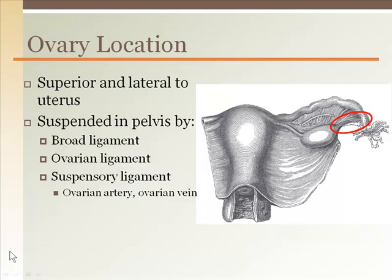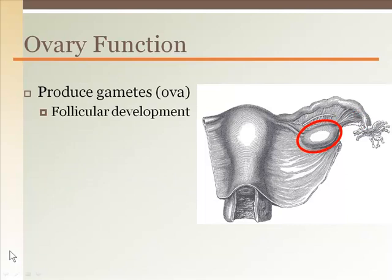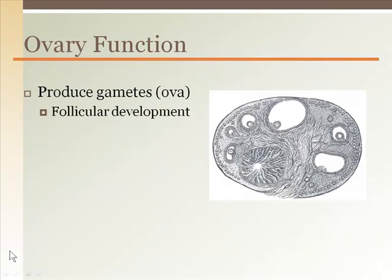The function of the ovary is to mature follicles as the egg or ova develops. All ova or eggs a female will ever have are in her ovaries from the time she was an embryo. The eggs are in a halted state of development until hormonal changes bring them out each month after puberty. Each cycle involves the development of the eggs and surrounding follicles until the follicle enlarges enough to eject the egg out of the ovary during ovulation.